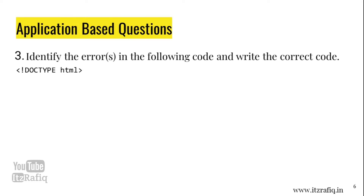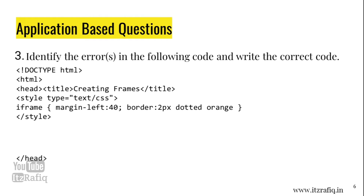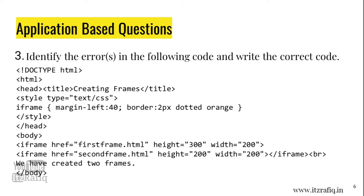Question number 3: Identify the errors in the following code and write the correct code. Looking at the HTML5 code, the mistake is that after body it says: iframe href='fastframe.html'. In an iframe tag there is no attribute called href — href belongs to the anchor tag — so this is a mistake. In place of href, we must write src: iframe src='fastframe.html' height='300' width='200'.